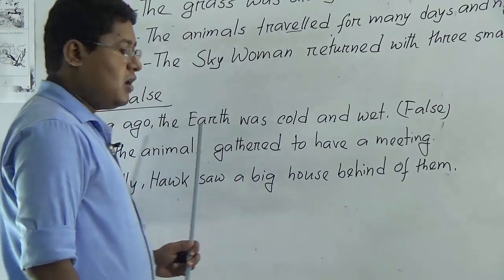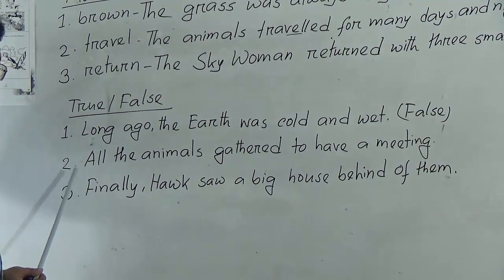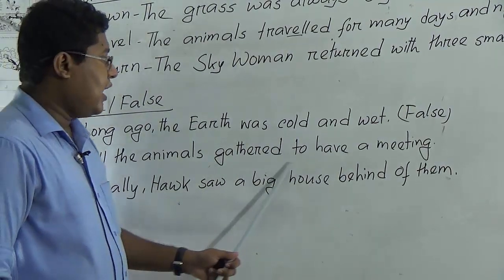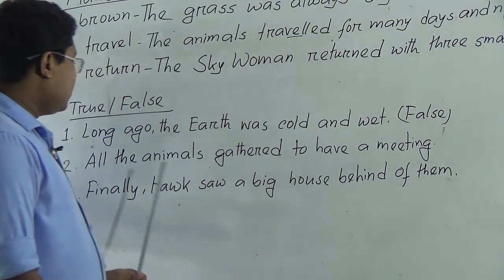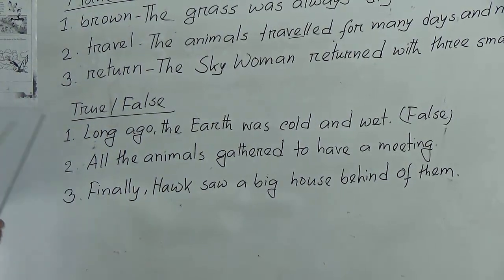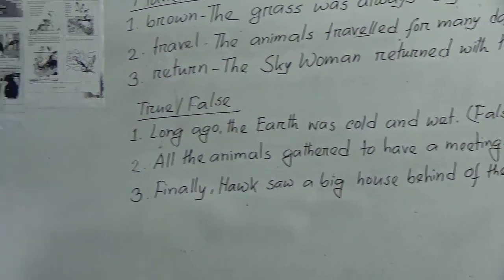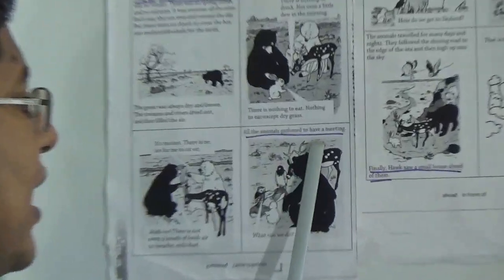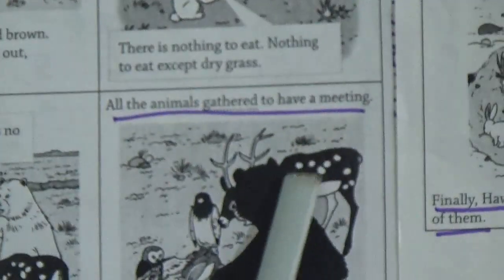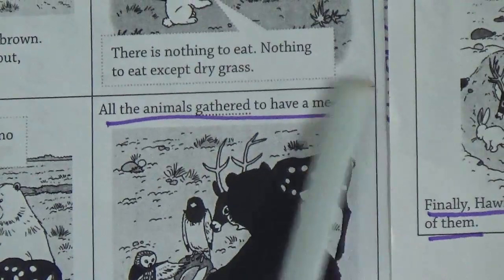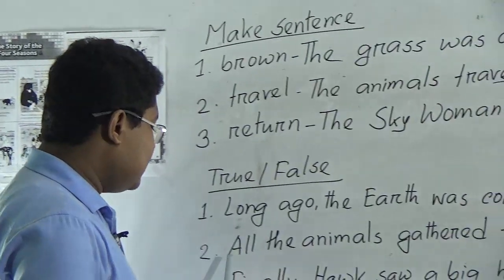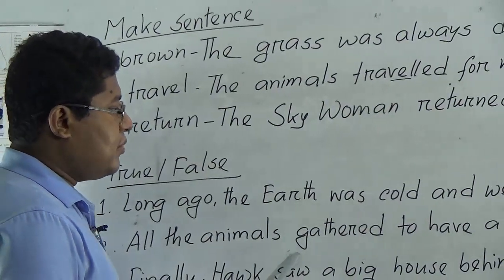Number two: 'All the animals gather to have a meeting.' Let's check the chapter. Comparing this line — 'All the animals gather to have a meeting.' This is a TRUE statement. So we write: 'All the animals gather to have a meeting' — TRUE.